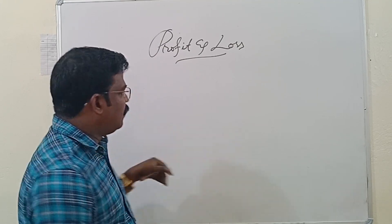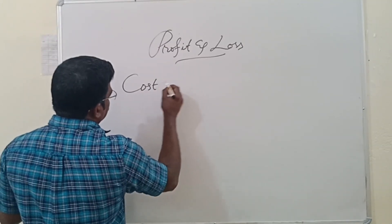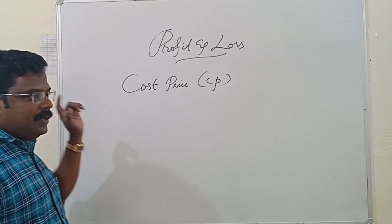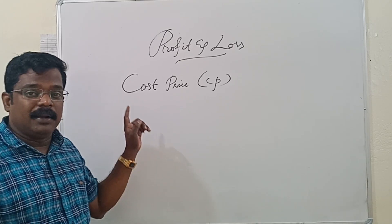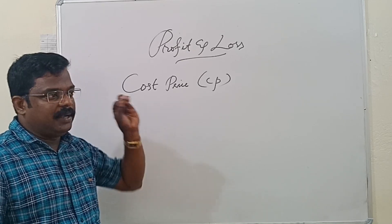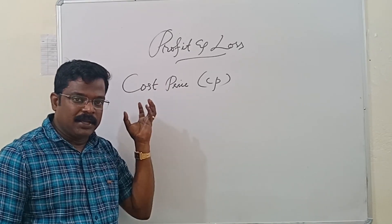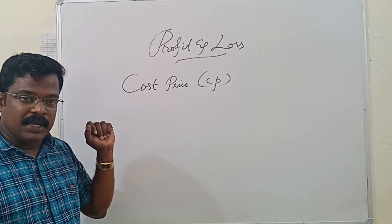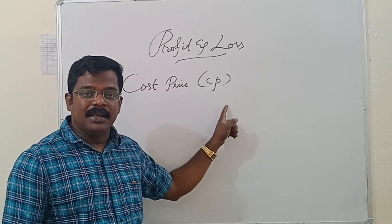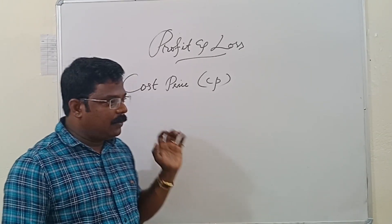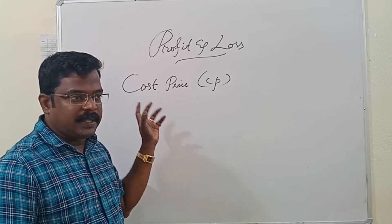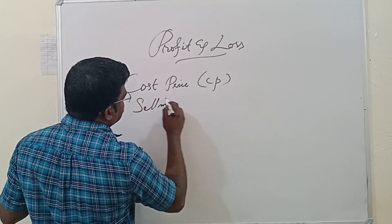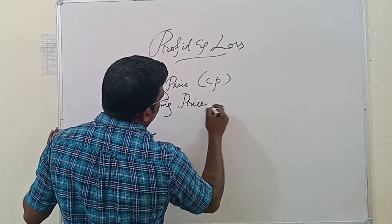First of all, you want to know what is cost price. Cost price, or CP, is the price at which an article is purchased — the amount we spend to purchase an article. That is called cost price. And what is selling price? The price at which an article is sold — that amount is called selling price, or SP.